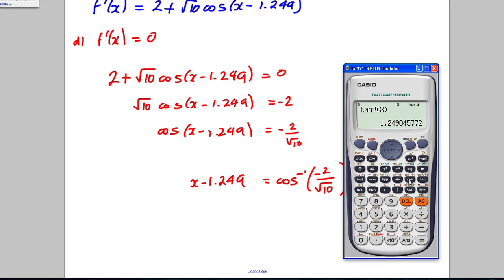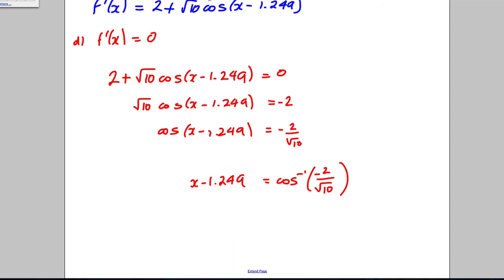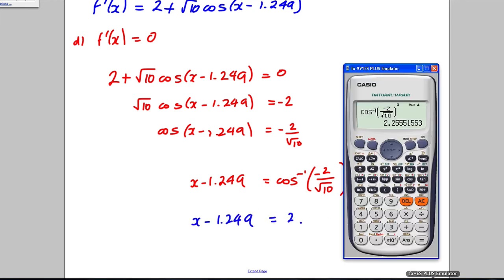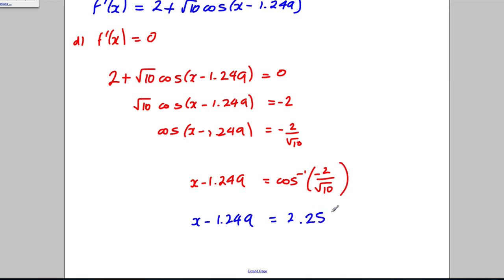Get your calculator out. The inverse cos of (-2/√10) gives 2.2555. So the first solution has x - 1.249 = 2.2555.